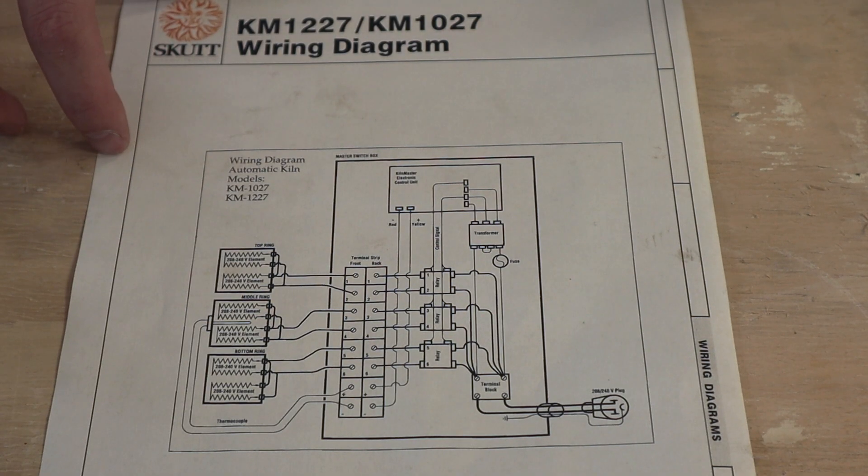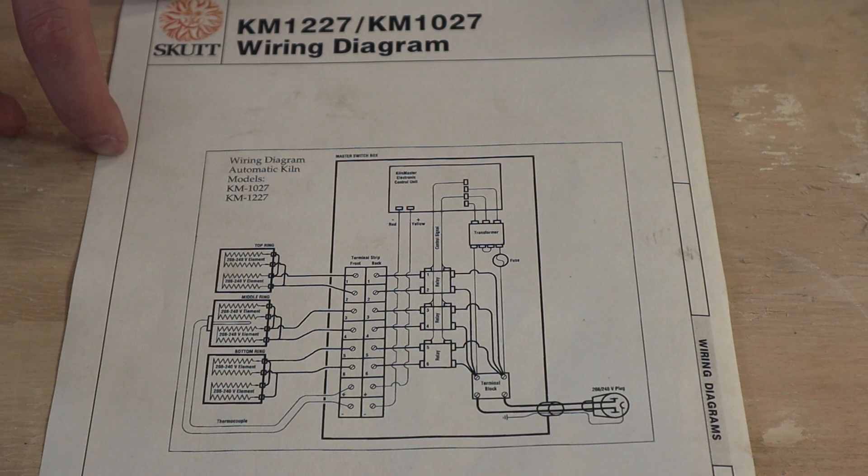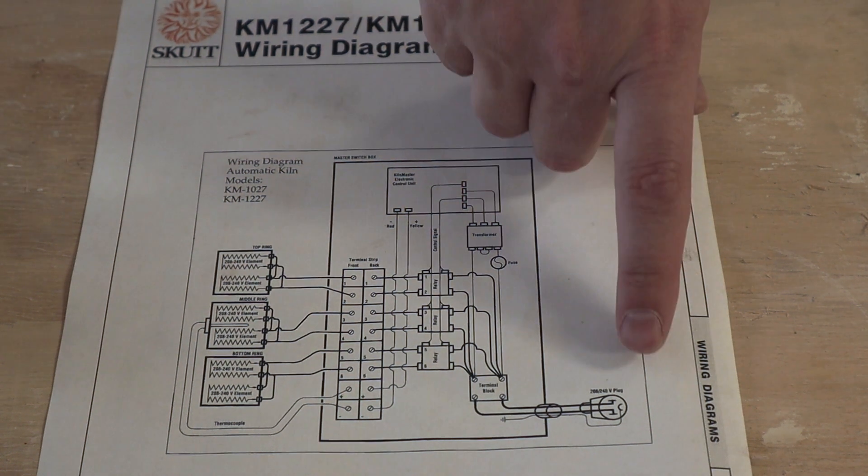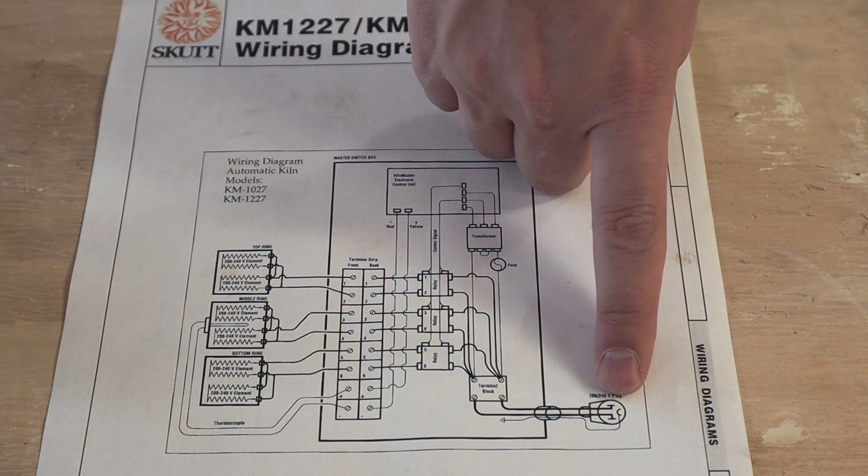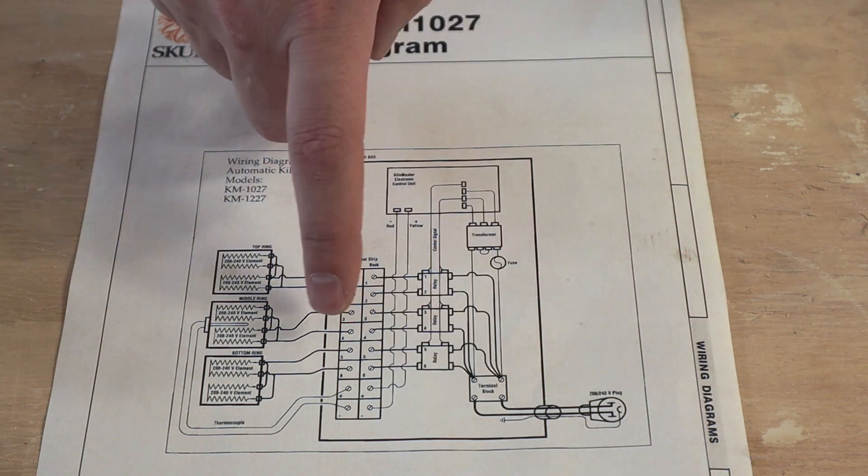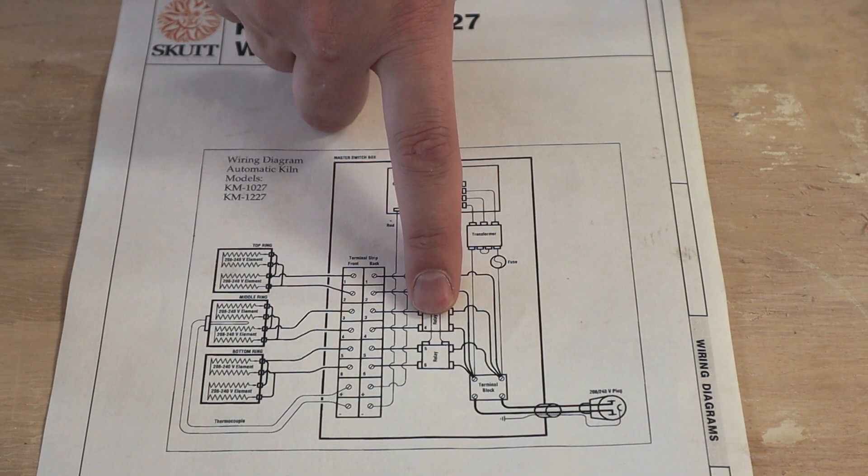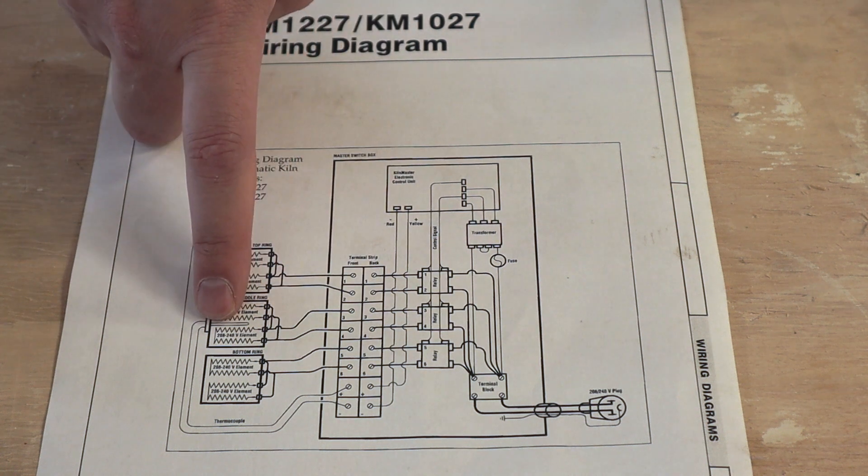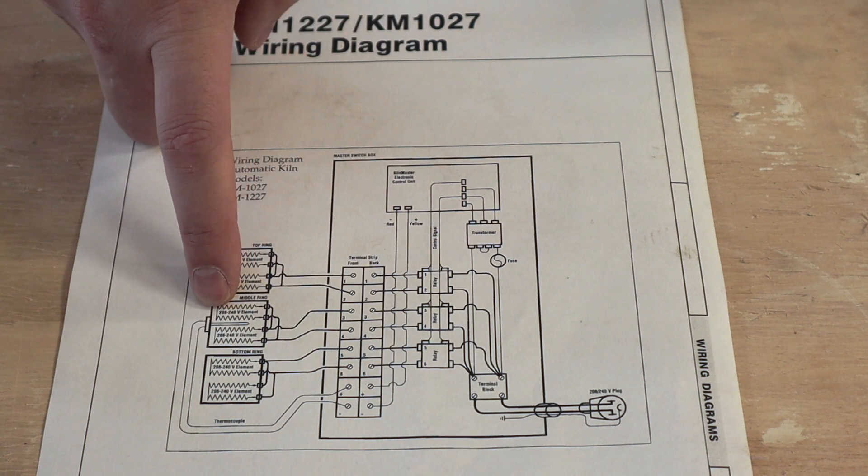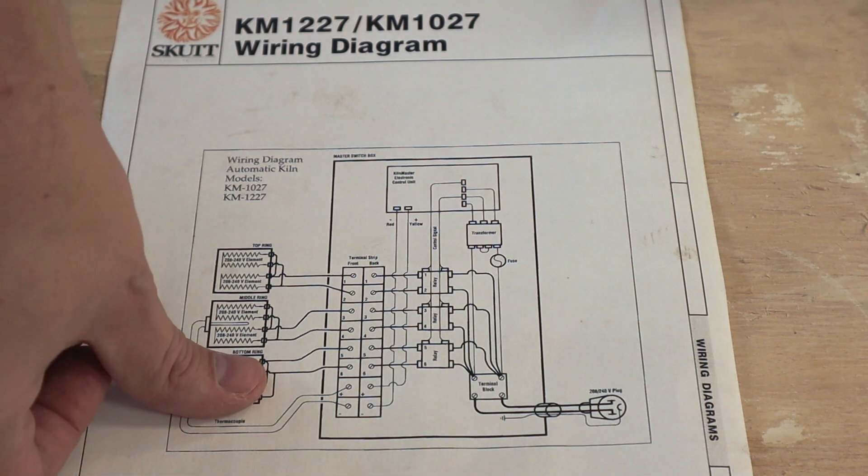So this is the wiring diagram I'm using for inspiration for my kiln. The high voltage power comes in, goes to a terminal block. Power then goes to each of the relays and then out to the elements within the kiln. Since I've removed one of the rings, I only have four elements, I don't have six.